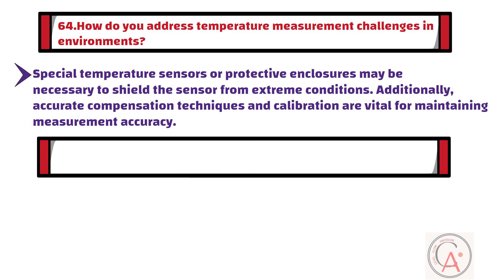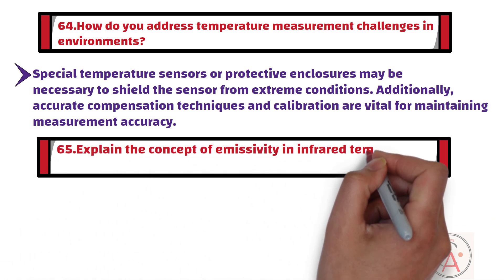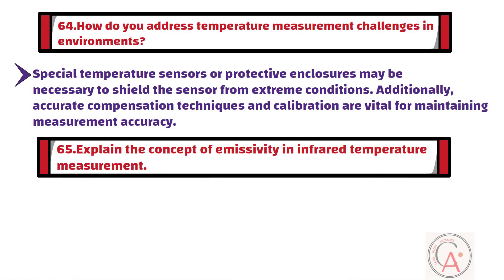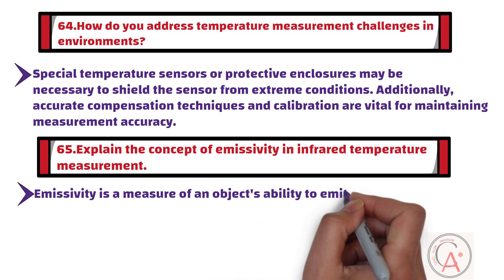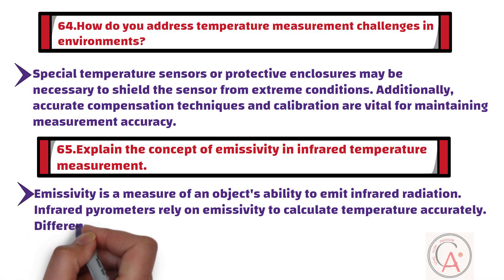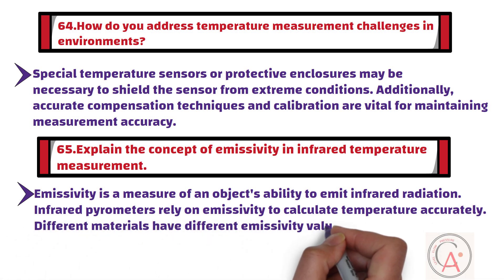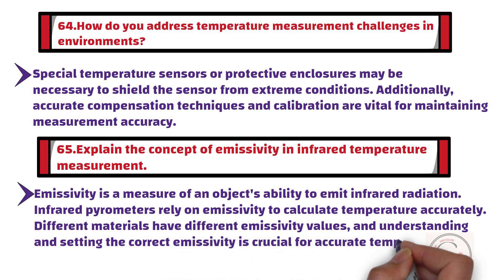Question number 65: Explain the concept of emissivity in infrared temperature measurement. Emissivity is a measure of an object's ability to emit infrared radiation. Infrared pyrometers rely on emissivity to calculate temperature accurately. Different materials have different emissivity values, and understanding and setting the correct emissivity is crucial for accurate temperature measurement.